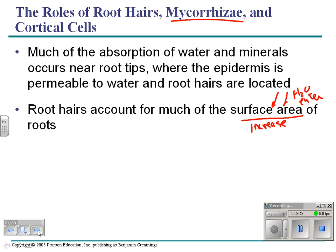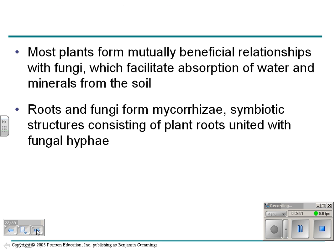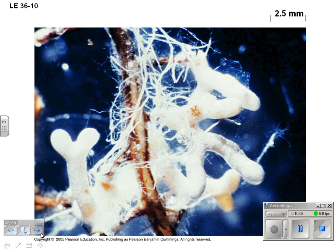Another thing that helps is the fungal association called mycorrhizae, which we've talked about in the past. Most plants have roots and fungi forming mycorrhizae — a symbiotic structure consisting of plant roots united with fungal hyphae. The hyphae help absorb water. Here's a plant surrounded by mycorrhizae, with the root in the middle and mycorrhizae around it.